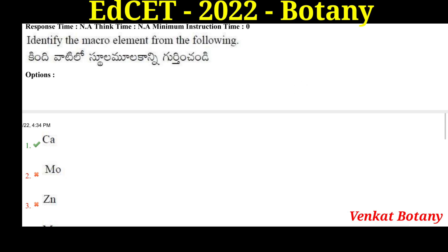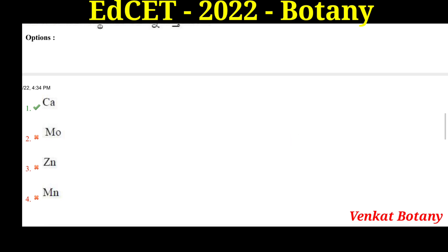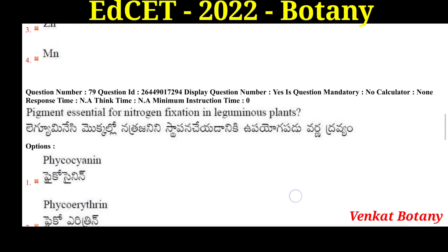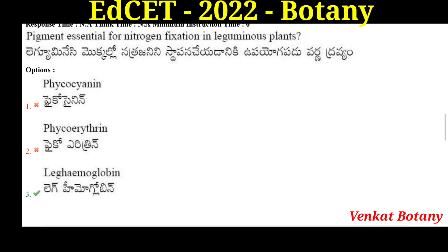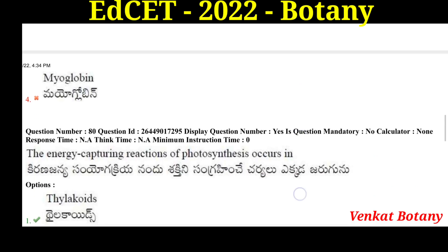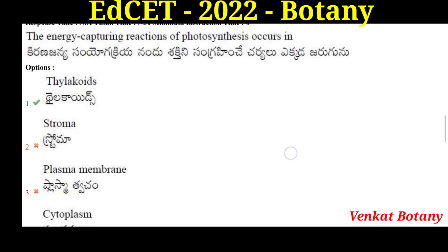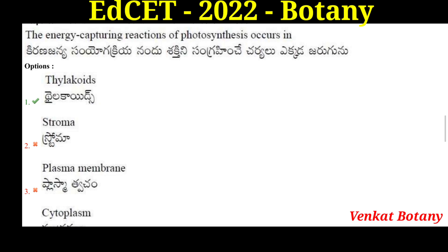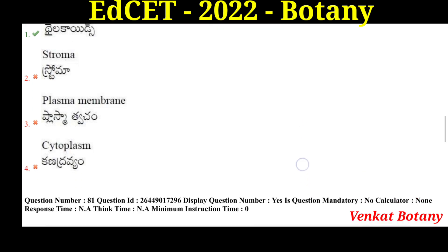Identify the macroelement from the following — the answer is Calcium. Micronutrients are the other category. The pigment essential for nitrogen fixation in leguminous plants is leghemoglobin. Leghemoglobin is sensitive to oxygen.